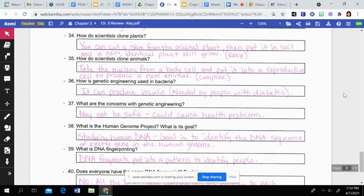But what they have to do is take the nucleus from a body cell and put it into a reproductive cell to then reproduce a new organism. So if you remember our mouse cloning activity, we kind of went through those steps. And it obviously can take a lot longer, and it can not be successful as well. So it's a much more complex process. Then genetic engineering can be used in bacteria. This can help produce insulin, which is needed by people with diabetes. So it's a benefit to have this genetic engineering where we can insert DNA and genes to produce what we want.